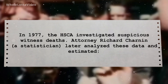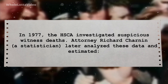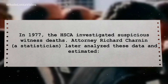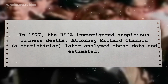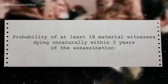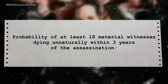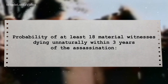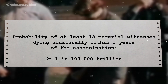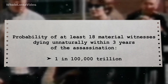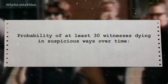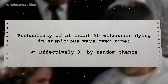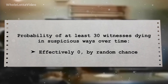The HSCA in 1977 investigated suspicious witness deaths. Attorney and statistician Richard Charnin later analyzed the data and estimated the probability of at least 18 material witnesses dying unnaturally within three years of the assassination at one in 100,000 trillion. The probability of at least 30 witnesses dying in suspicious ways over time is effectively zero by random chance.